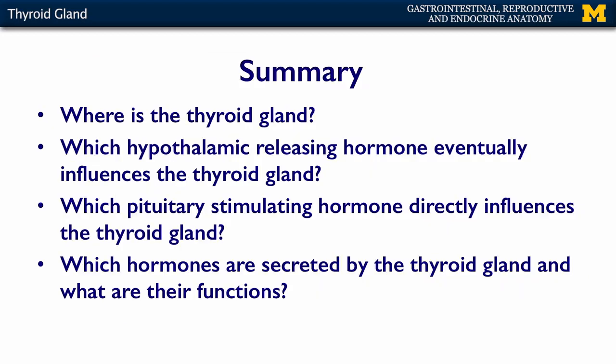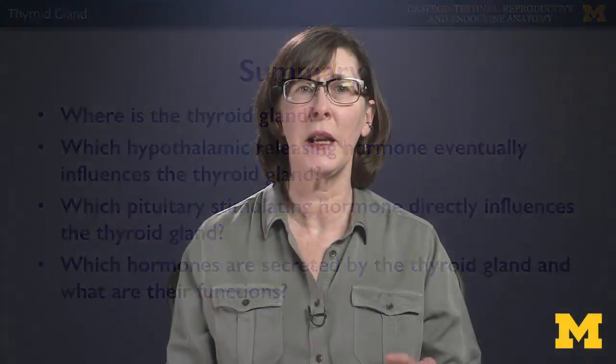In summary, what I'd like you to know for the assessment is: where is the thyroid gland? Which hypothalamic releasing hormone eventually influences the thyroid gland? Which pituitary stimulating hormone directly influences the thyroid gland? What hormones are secreted by the thyroid gland and what are their functions? Remember, there are the thyroid follicles and the parafollicular cells — be able to distinguish between those two cell types, what they're secreting, and which one is under the influence of the hypothalamus and pituitary and which one is not. If you have a grasp on all of these concepts, you're going to be ready for the assessment.